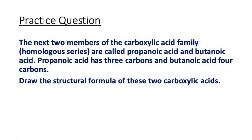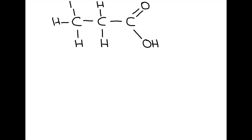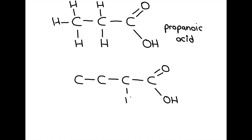Let's test your understanding with a practice question. The next two members of the carboxylic acid family are propanoic acid, with three carbons, and butanoic acid, with four carbons. Pause the video and draw the structural formulae of these two carboxylic acids. Here are the answers: propanoic acid has three carbons in the chain, and butanoic acid has four carbons in the chain, and both have the COOH functional group.